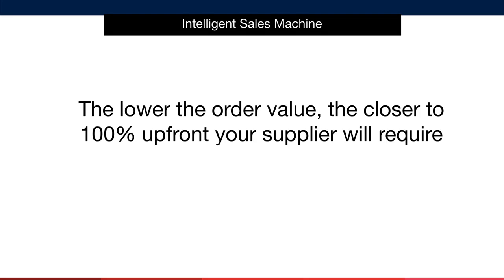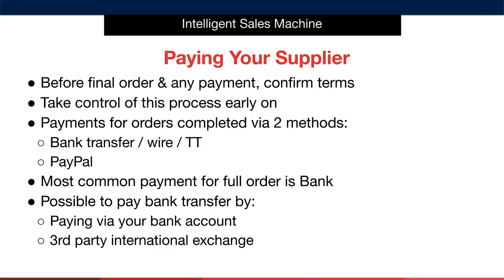So how do you actually pay these deposits and balances to your supplier? The first thing you're going to do before finalising the order and making any form of payment is to confirm the payment terms that we just discussed. We'll confirm these terms on the purchase order that you created. It's important to take control of this process early on as it shows professionalism and helps you create a system around your ordering. You'll make payments using one of two methods: number one, a bank transfer or wire, sometimes known as a TT for telegraphic transfer.